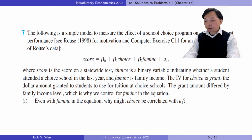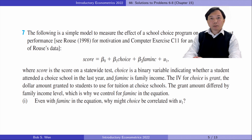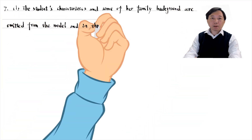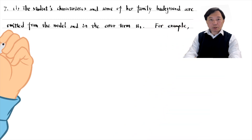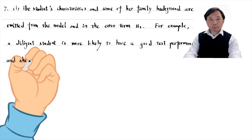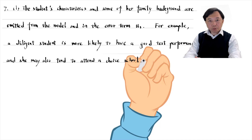The grant amount differed by family income level, so we controlled for family income in the equation. In part 1, even with family income in the equation, why might choice be correlated with mu1? The student's characteristics and some of her family background are omitted from the model and captured in the error term mu1. For example, a diligent student is more likely to have a good test performance, and she may also tend to attend a choice school. The OLS estimate for the choice school effect on test scores may be upward biased without considering diligence.